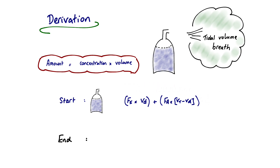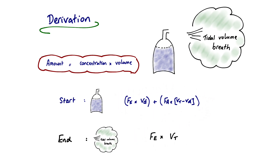At the end state, we consider the expired gases: concentration FE multiplied by the expired volume, which by definition is the tidal volume VT. We then equate the start state to the end state — the amount of CO2 before breathing out equals the amount after — and do some rearranging to arrive at the Bohr equation.